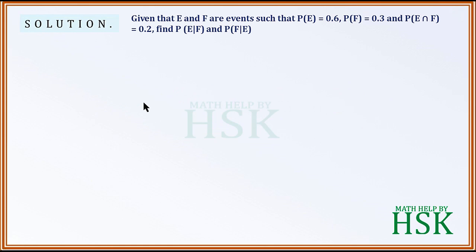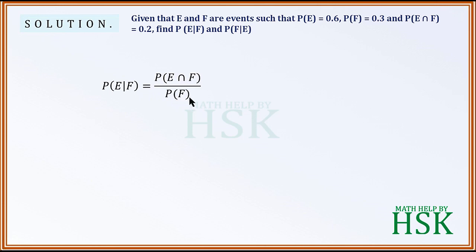To solve this question, we need to know the result that the probability of E given F is equal to probability of E intersection F upon probability of F. Substituting the values, it will be equal to 0.2 upon 0.3. The probability of F is 0.3 and probability of E intersection F is 0.2, which gives 2 upon 3.